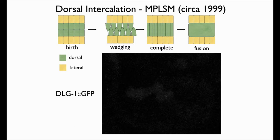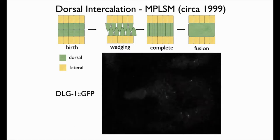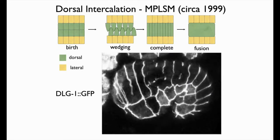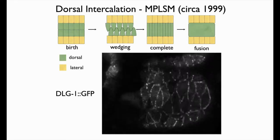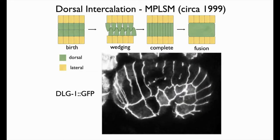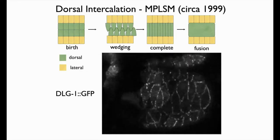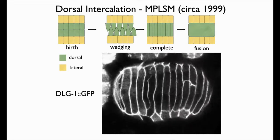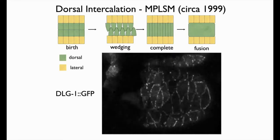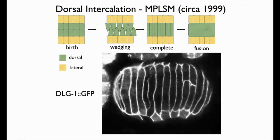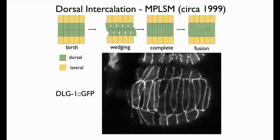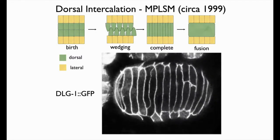To show that they really are epithelial, the next slide shows a multi-photon movie of embryos expressing a GFP-tagged version of DISCS LARGE (DLG1). The cells become wedge-shaped and make a characteristic ladder-like structure. By the end, some cell boundaries between dorsal cells fray away because these cells make multinucleate syncytia later in development. The key point is that we can study intercalation at the level of single cells using genetically encoded markers.